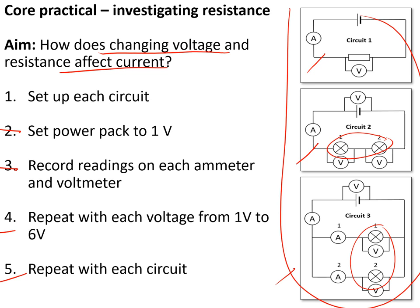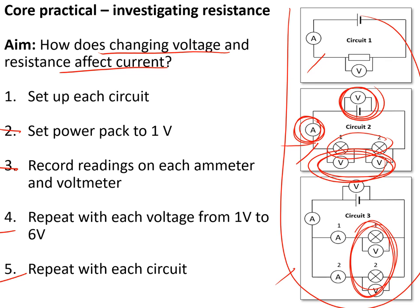We found that increasing the voltage increased the current, and increasing the resistance decreased the current. On the series circuit the current was the same throughout, but the voltage was shared equally between the two bulbs — so each got half the supply voltage. On the parallel circuit, the voltage at each voltmeter was the same as at the power pack, but the current was split across each branch.